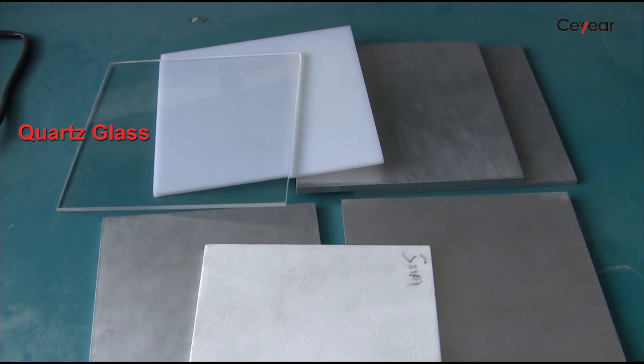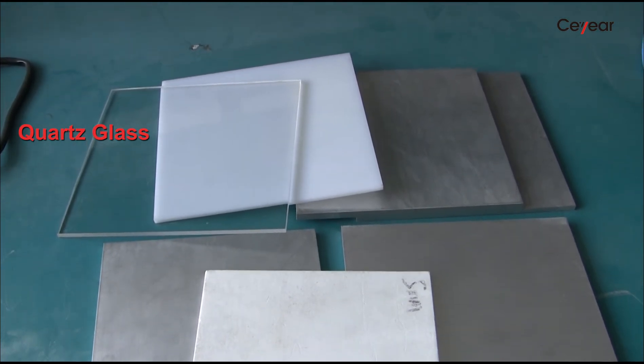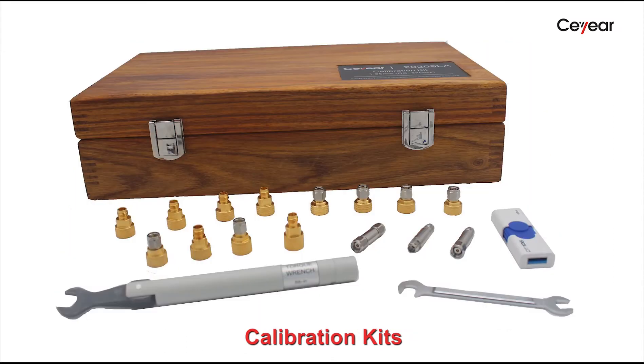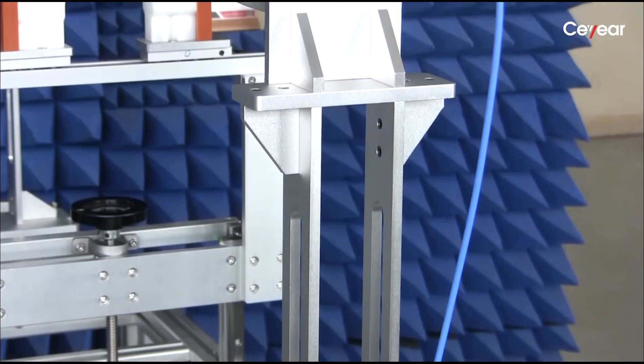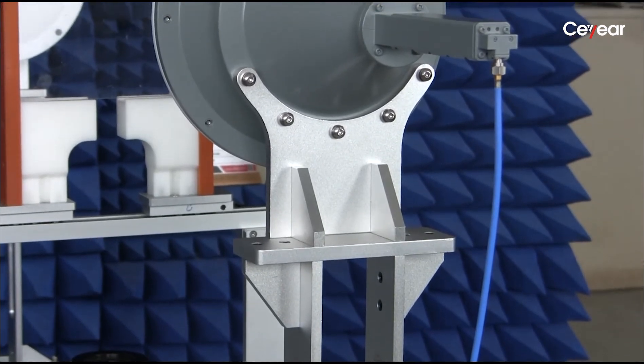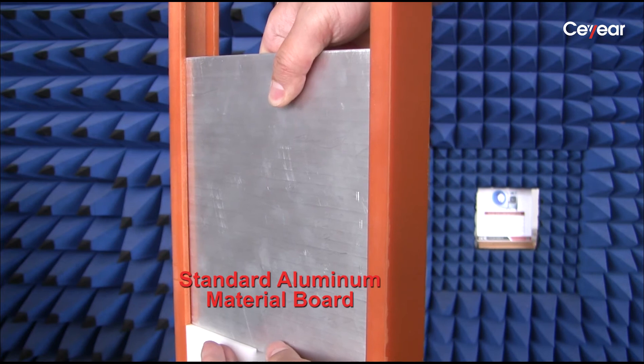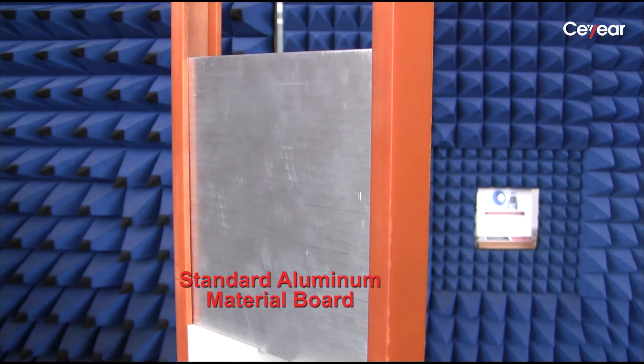Now, let's test the dielectric constant of coarse glass. Firstly, we use the calibration case to make a double port calibration at both cable ends. Then, we insert the standard aluminum bolt to make a full reflection calibration.